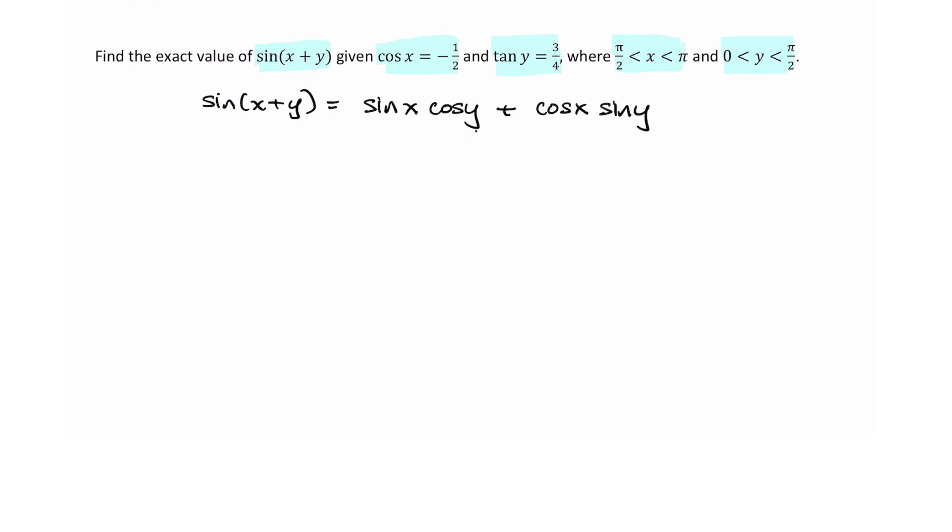So far we are given the value of cosine of x and that is pretty much it right now. So what we need to do is use the given information to find the values of the other trig functions of each angle. So starting with angle x.